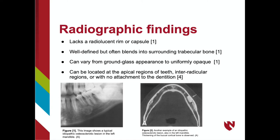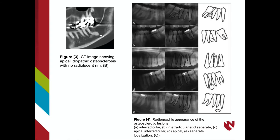Figure 1 shows a classic example of idiopathic osteosclerosis, located in the premolar and first molar region of the left mandible. Figure 2 shows another typical example — this lesion is radiopaque and also located in the left mandible. Figure 3 is a CT image of idiopathic osteosclerosis in the apical region, lacking a radiolucent rim. Figure 4 provides an illustration of the variety we may see: Image A shows an interradicular lesion; Image B is an interradicular and separate lesion; Image C is an apical, interradicular lesion; Image D is an apical lesion; and Image E is a separate, localized lesion.